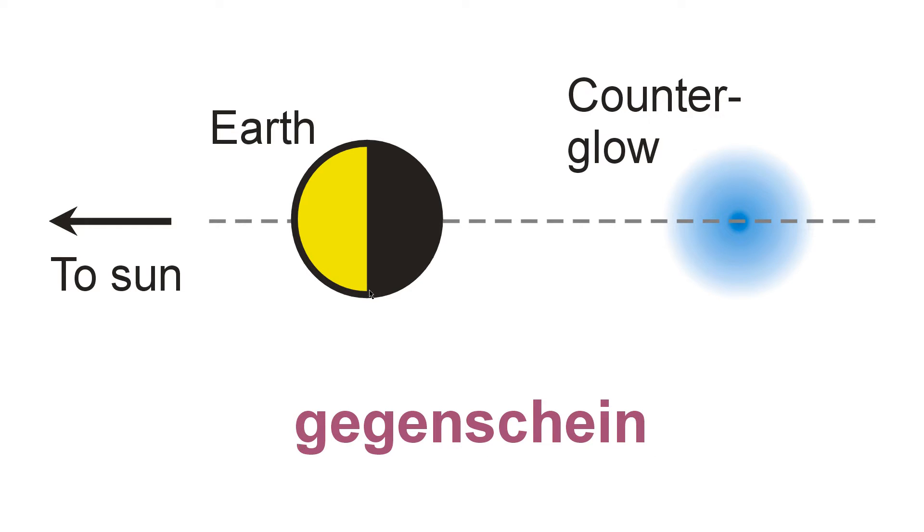Well, on the largest scale, it's a faint glow that you see in the heavens, exactly opposite the sun.